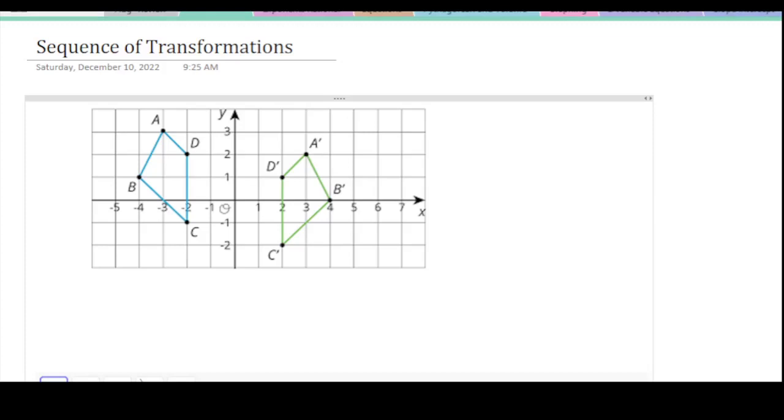A sequence of transformation is just kind of putting all of our transformations together. It just means more than one thing is happening.